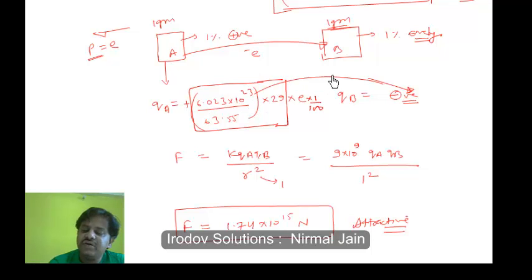This is the value of qa which will be exactly equal to qb, but qb will be negative and qa will be positive. So we have to find force between this object A and this object B, so k qa qb by r square. R is equal to 1, so k is 9 into 10 to the power 9.